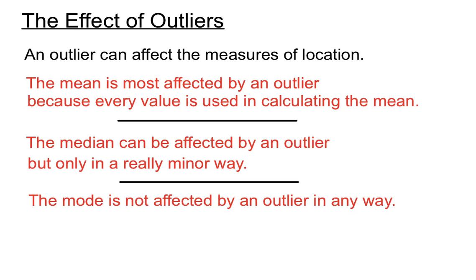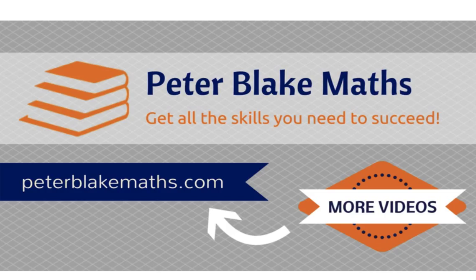The mode is almost always going to stay what it was before, even when we add a really large or really small score. It's interesting, we've got the three measures of location - mean, median, and mode - and each of them are affected in different ways by the addition of an outlier to a set of scores. That's all about outliers. Catch you next time. PeterBlakeMaths.com, all the best with your studies. Bye-bye.